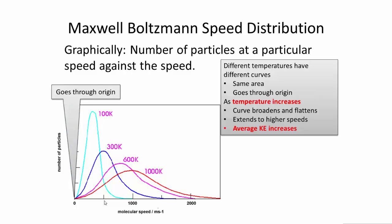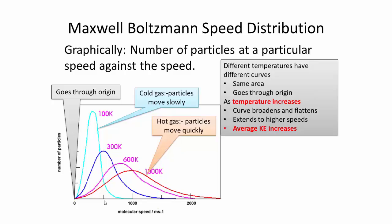All of the graphs go through the origin. The cold gas has particles which are basically moving slower than the particles in the hot gas. The hot gas, the particles move quickly on average. You can see by looking at this area that indeed some of the particles in the hundred Kelvin gas are actually moving faster than the average for the 300, but it's basically a statistical analysis here. We're looking at the average.